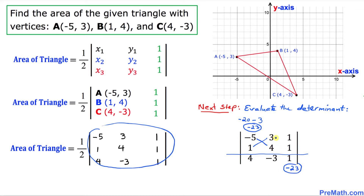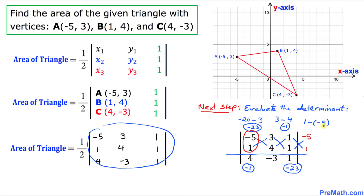Let's do the same thing in the next pair. This 3 times 1 is 3, then we put a minus sign. 4 times 1 is 4. 3 minus 4 is negative 1, so negative 1 is going to go on the opposite side. Now we need to fill out this middle part. Let me just look at this very first column — copy and paste negative 5 and 1 — and simply crisscross. 1 times 1 is 1, minus 1 times negative 5 is negative 5, which equals 6. So 6 is going to come in the middle.